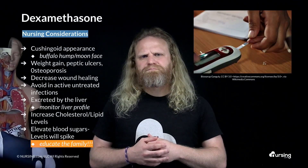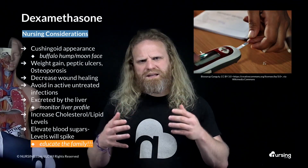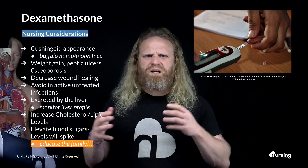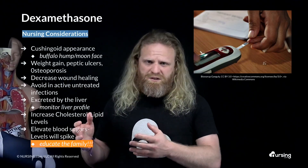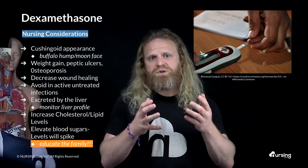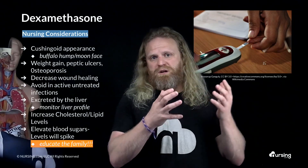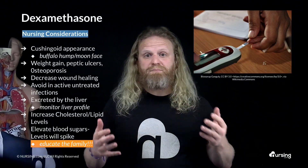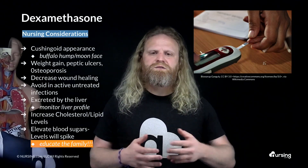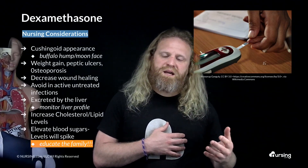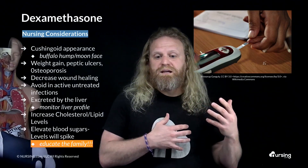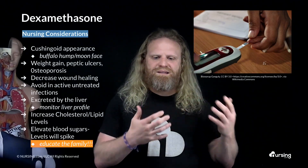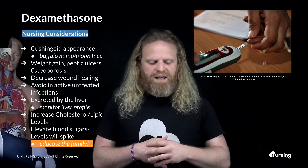One really important thing: dexamethasone can elevate blood sugar levels. You might see your patient's blood sugar spike up to 300 or even 400 while they're taking this, even if they're non-diabetic. So you really want to teach the patient and the family that they are not diabetic — this is a side effect of the medication.